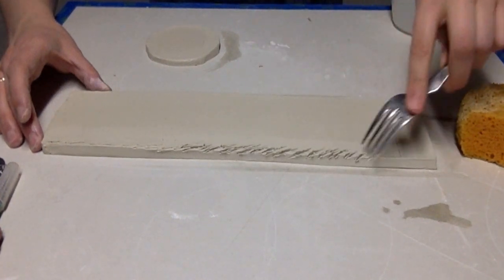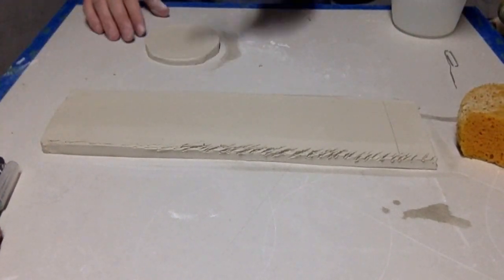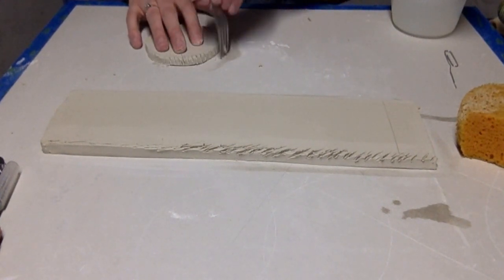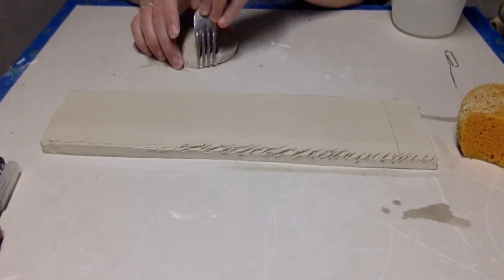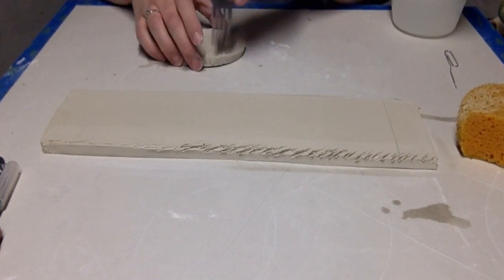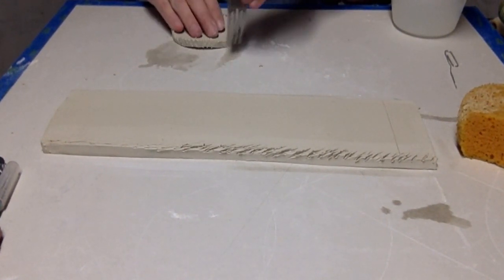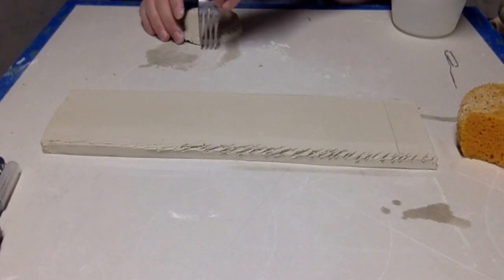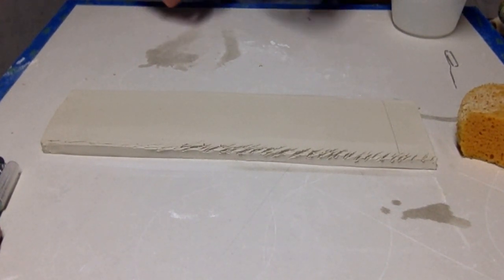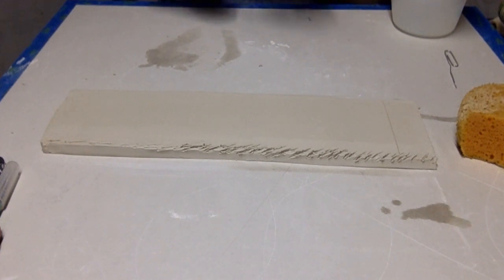I use a fork for my scoring, but you could use any other tool that is sharp and will make a line. The paperclip would work for scoring as well but will obviously take longer than a fork. Make sure you really slip and score all of the edges that are going to be joined together to make sure that they have that glue that will be able to stick.